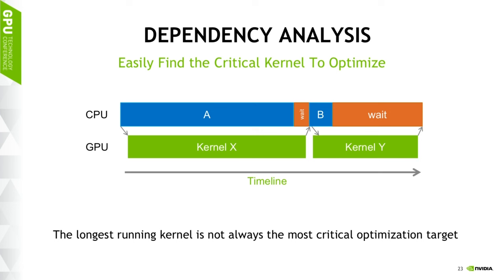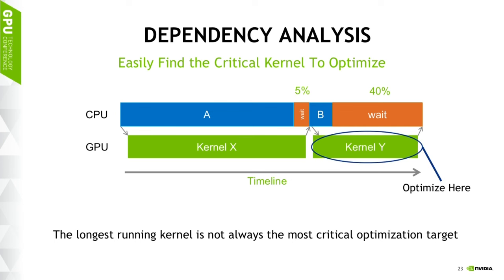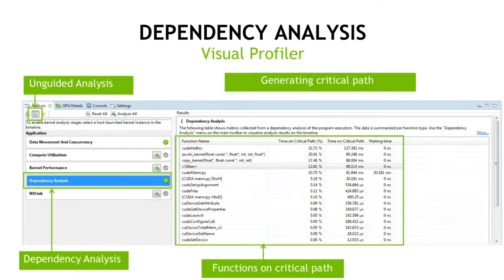Here's a cartoon of a timeline from a hypothetical application where the CPU and GPU are both doing work with dependencies between them. CPU function A launches kernel X and waits for it to finish before CPU function B runs, which launches kernel Y and waits for it. Kernel X has a longer runtime than kernel Y, but because function B is much faster than function A, there's a lot more CPU idle time due to kernel Y — it affects total runtime more than kernel X. Dependency analysis helps you find that out so you know to optimize kernel Y instead of kernel X first.